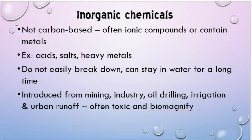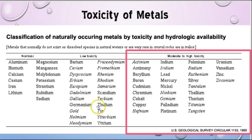Once we get away from organic compounds, we also have inorganic chemicals that can be very toxic. These are not carbon-based — they don't have those carbon-hydrogen chains — they're usually either ionic compounds like salts or pure metals. This includes acids, salts, and heavy metals. These also do not break down very easily and will stay in the environment for a long period of time. They can be introduced through many different avenues, they do biomagnify, and they tend to be very toxic to organisms. Metals occur in the environment all the time, but a lot of these heavy metals are sort of trapped underground — by mining or by using them in products, we introduce them above ground where they don't really belong.